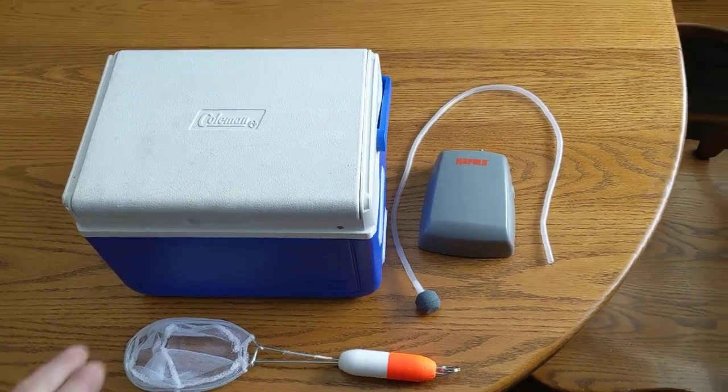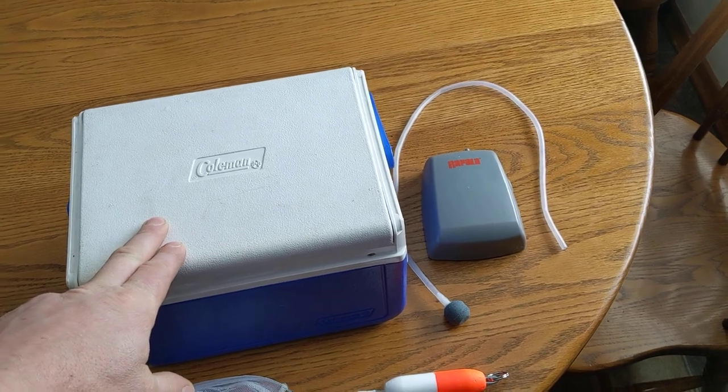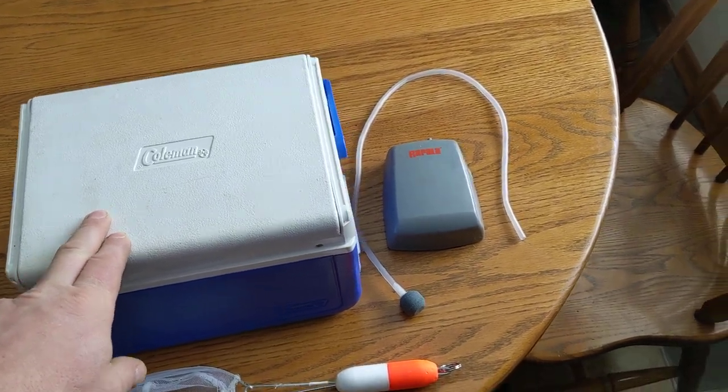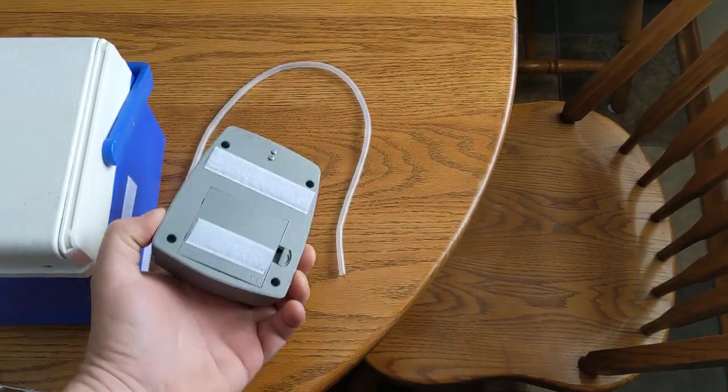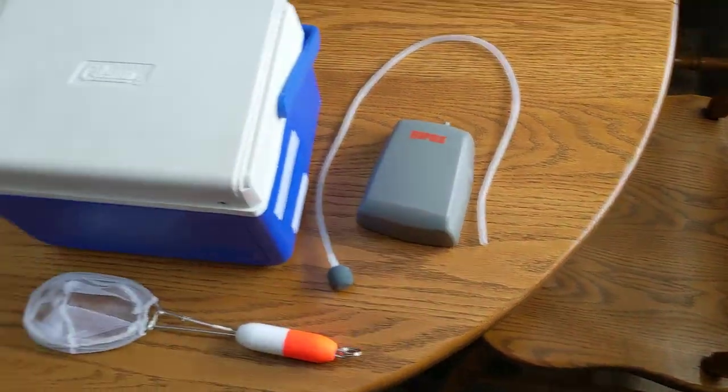So I started out with a Coleman five-quart lunch pail and then I have the Rapala aerator or bubbler and just a regular minnow net.